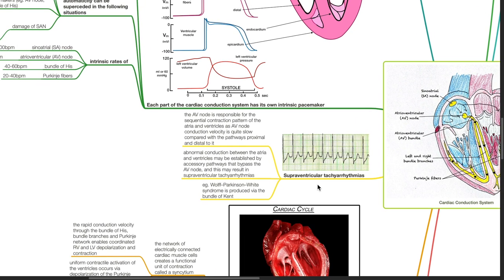Supraventricular tachyarrhythmias. The AV node is responsible for the sequential contraction pattern of the atria and ventricles, as the AV node conduction velocity is quite slow compared with pathways proximal and distal to it. Abnormal conduction between the atria and ventricles may be established by accessory pathways that bypass the AV node, resulting in supraventricular tachyarrhythmias such as Wolff-Parkinson-White syndrome, which is produced via the bundle of Kent accessory pathway.